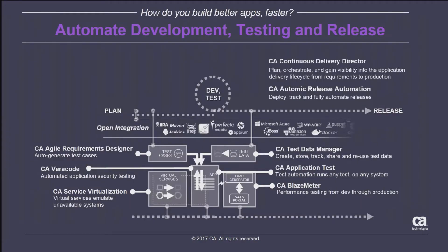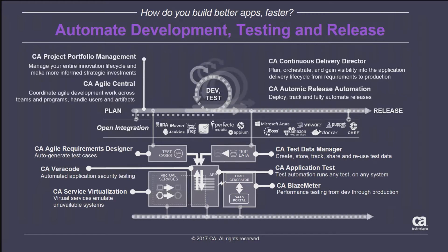Here is the product set you're going to see as part of this demonstration. Previously we looked at the requirements, using CA Project Portfolio Management to define your projects, and then that links with Agile Central to drive your user stories and features. We modeled it all in Agile Requirement Designer, and in the previous video we showed how the developer can use our toolset to build out the actual changes. Today we're going to show the next stage — the release — how you take that code change and push it through your various environments in a secure, reliable way. We'll show our Continuous Delivery Director dashboard driving the CA Automic tool, and we'll leverage test data management, Application Test, BlazeMeter, service virtualization, and Vericode security scans.